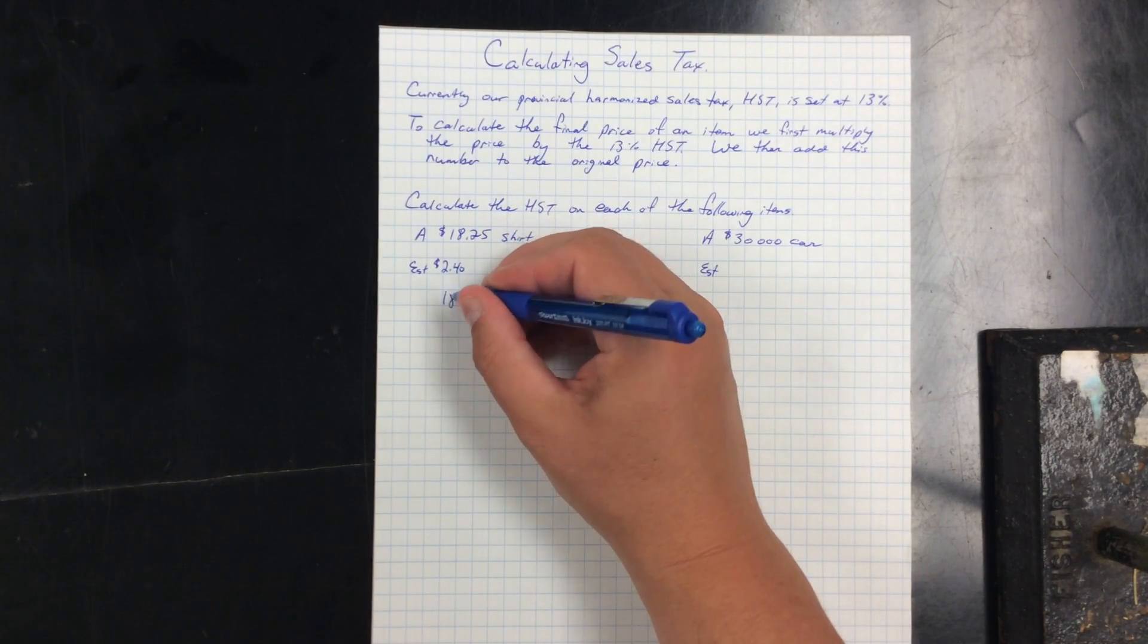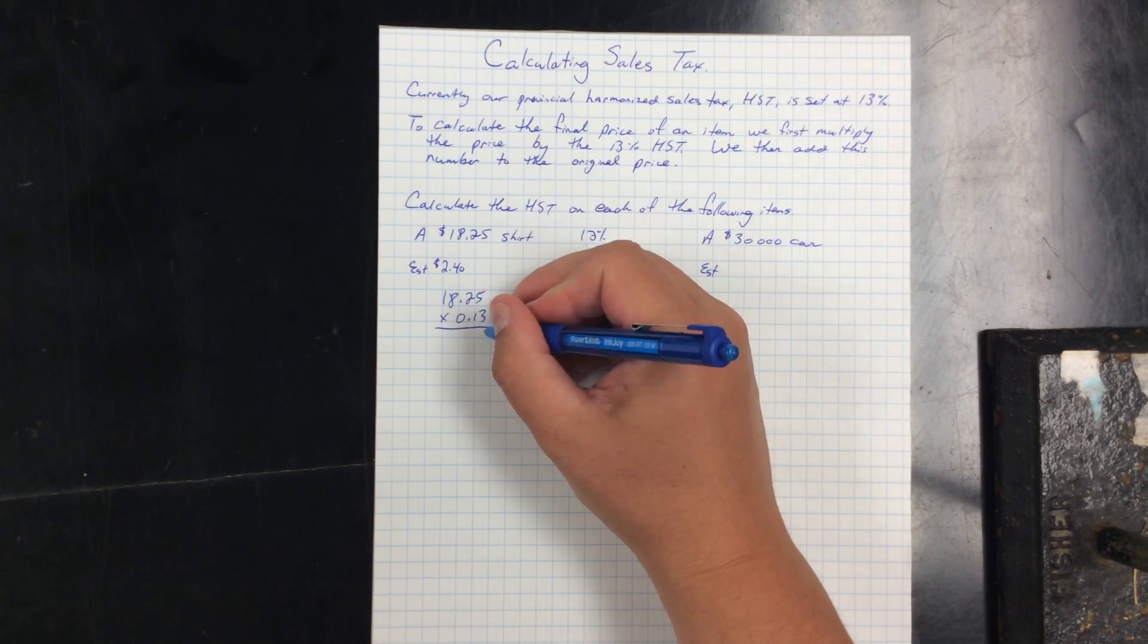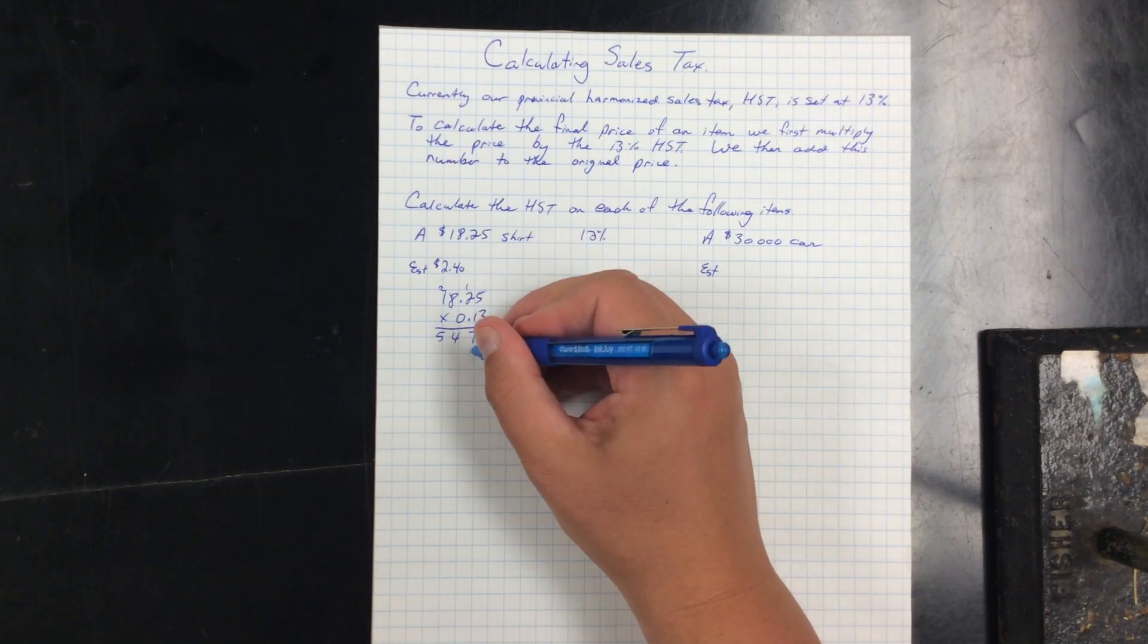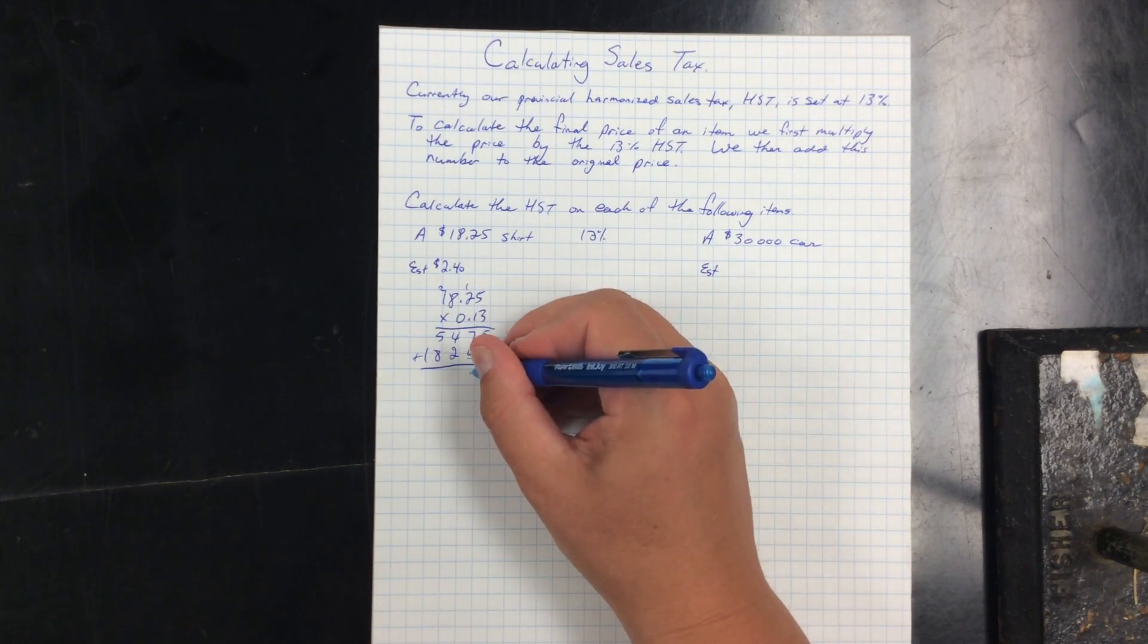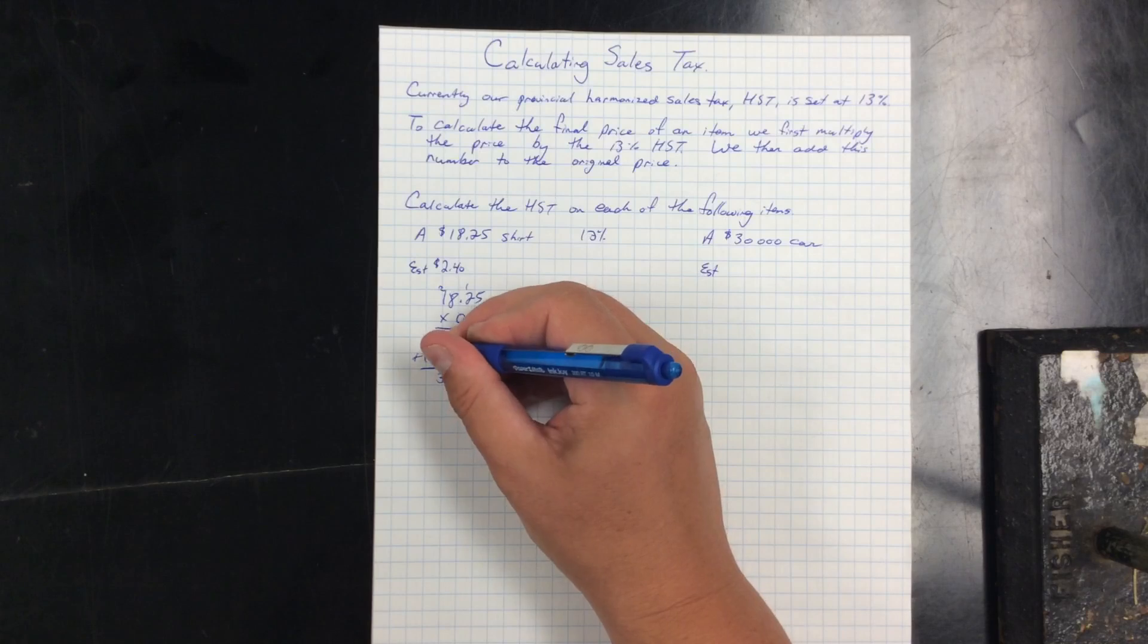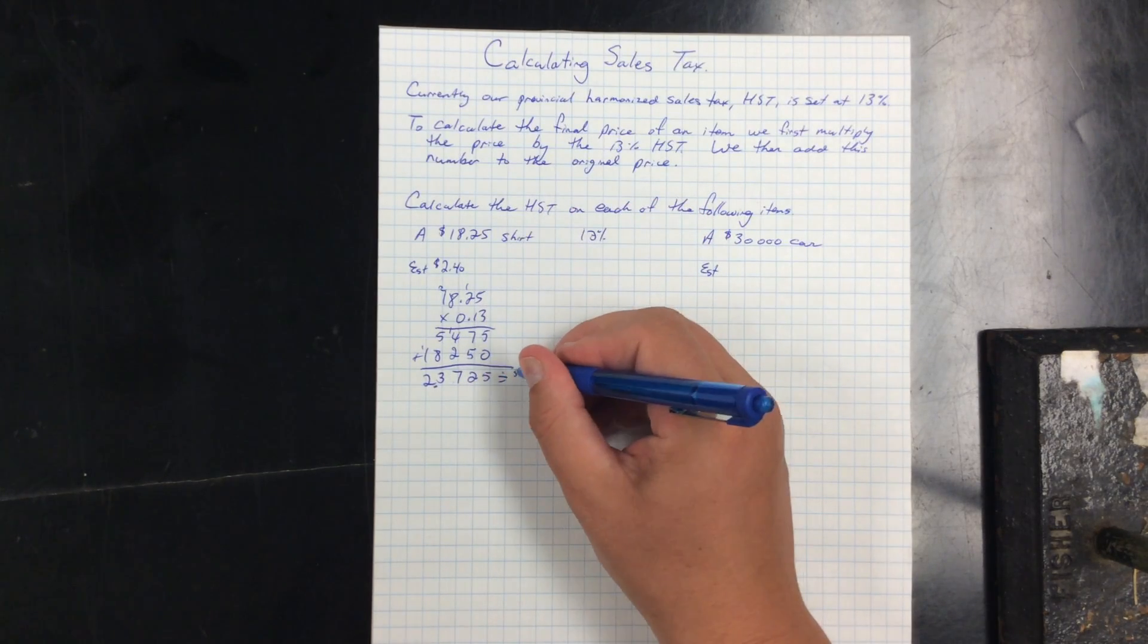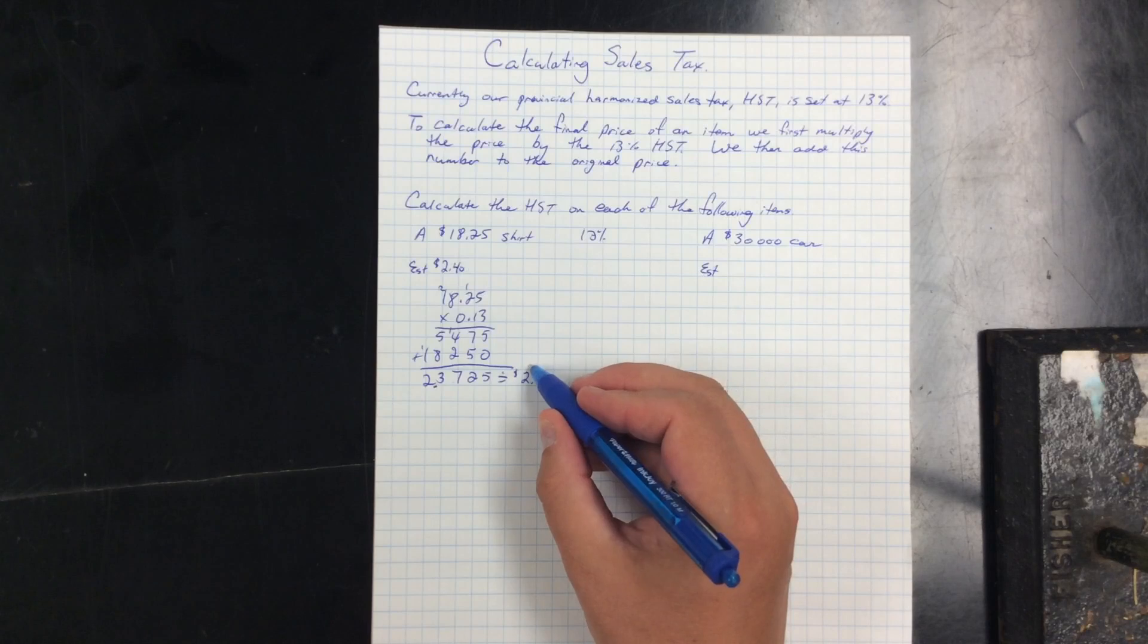Alright, so I'm going to take my 18.25 and multiply it by the tax of 13%. 3 times 5 is 15, 3 times 2 is 6, 7, 3 times 8 is 24, 3 times 1 is 3, 2, and then 5, 2, 8, 1. I'm going to add this up: 5, 12, 7, 13, with 1, 2, 3, 4 decimal places. So the actual tax when I do rounding is $2.37.